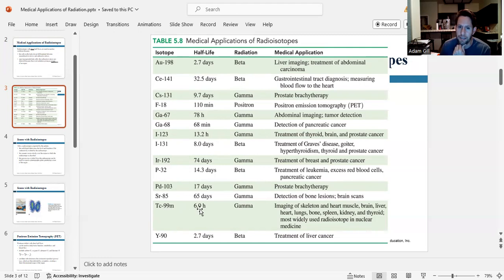Technetium-99, a half-life of six hours. It's a gamma emitter. We use it for the imaging of skeleton and heart muscle, brain, liver, heart, lungs, bones, spleen, kidney, and thyroid. And it's the most widely used radioisotope in nuclear medicine. So this is used for a ton of different things. It's the most common.